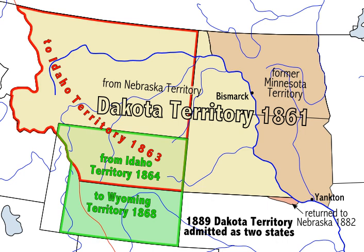Dakota Territory was the setting for the syndicated western television series Man Without a Gun, starring Rex Reason as newspaper editor Adam MacLean and Mort Mills as Marshall Frank Tillman. The program aired from 1957 to 1959.